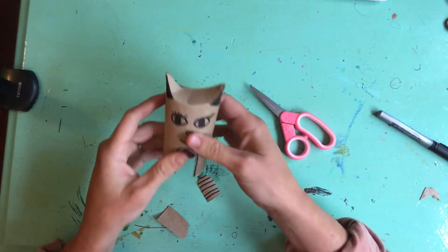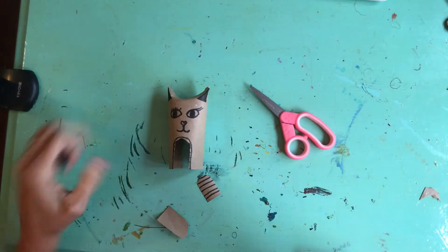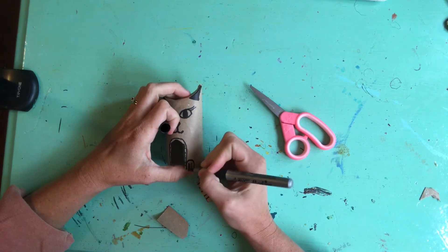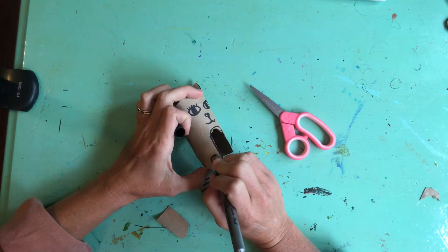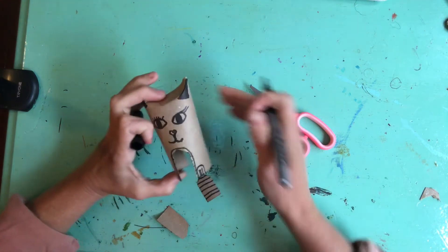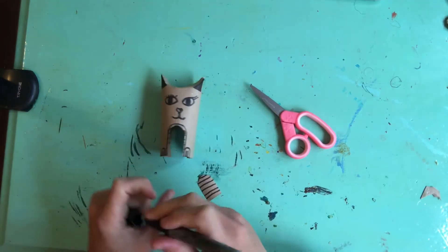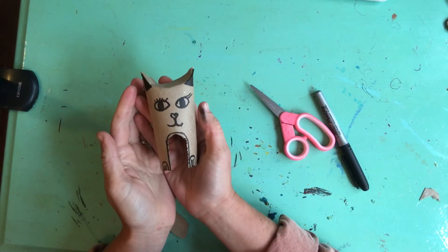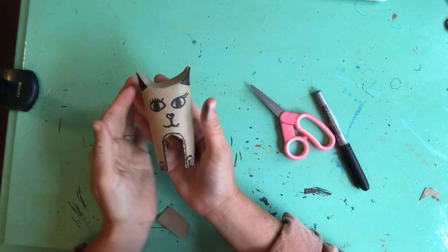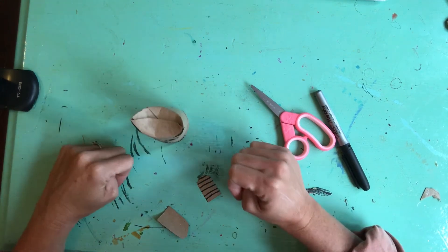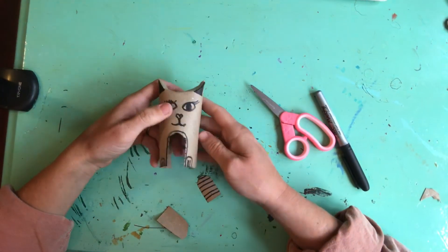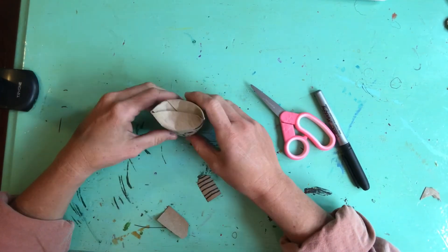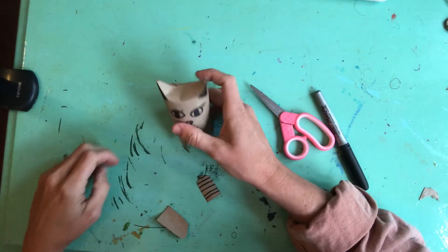There you go. Now just curve line, and now you kind of have little cat arms and you can stand it up. So those are your options. I hope you enjoy making your cat out of a toilet paper roll. Have a wonderful rest of your day, y'all.